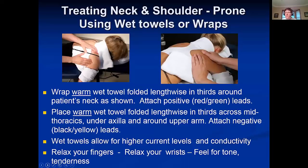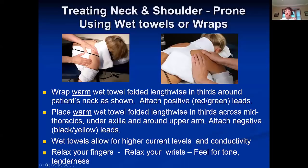With FSM, because you can treat the nerve and the muscle at the same time, you want contacts bracketing all of the relevant tissues. If all you can do is put your thumb in it, your elbow in it, or stick a needle in it, you don't care about the neck when working on the shoulder. But with FSM, we use wet towels to cover all the relevant tissues.